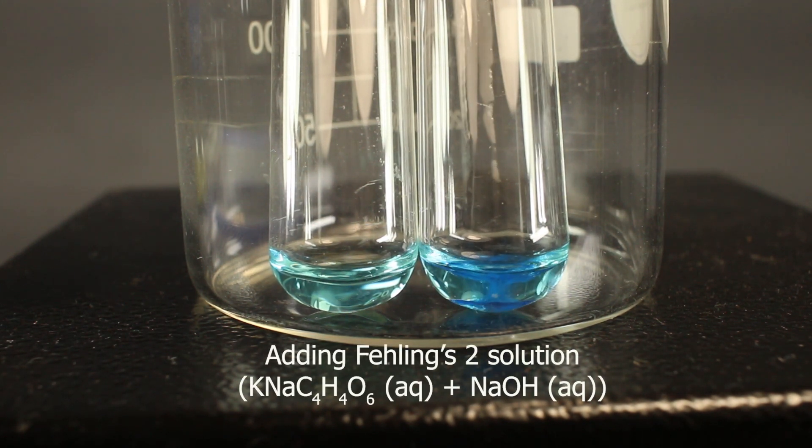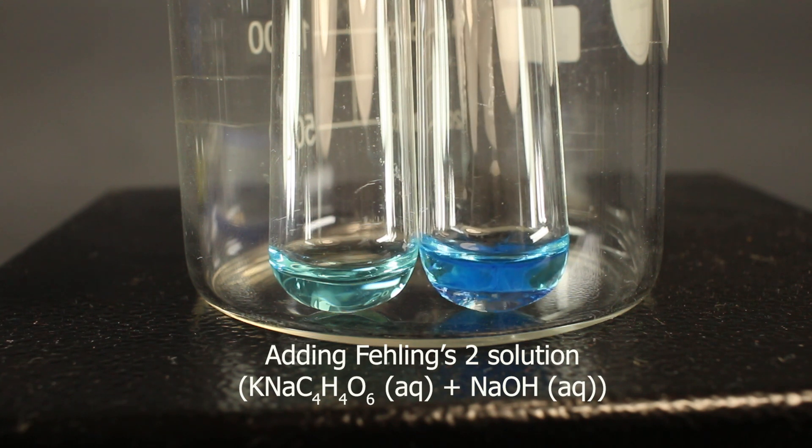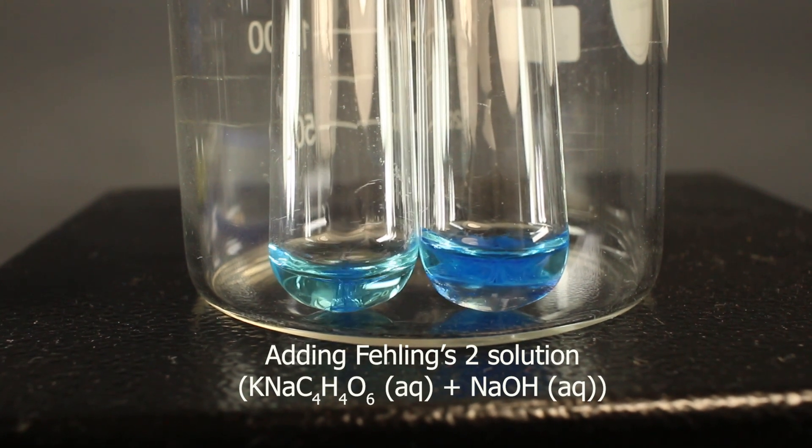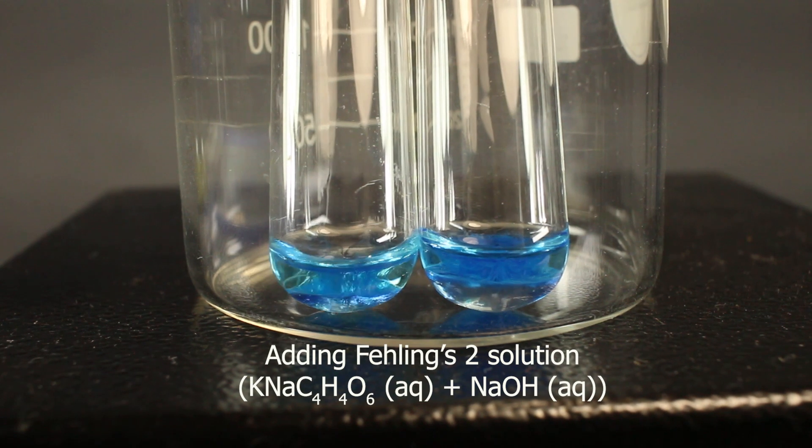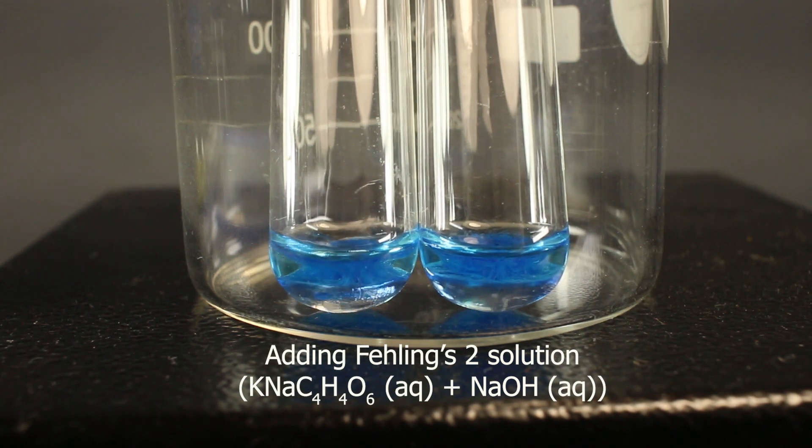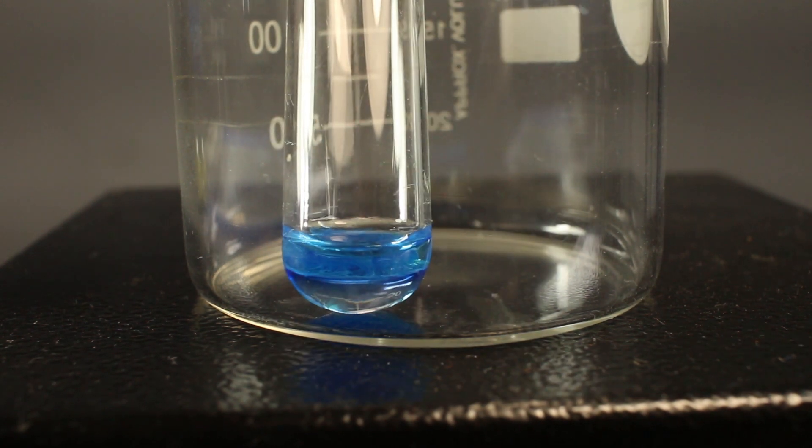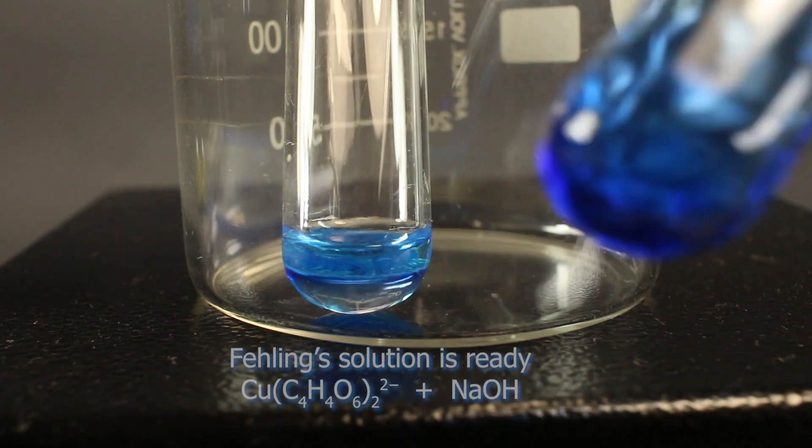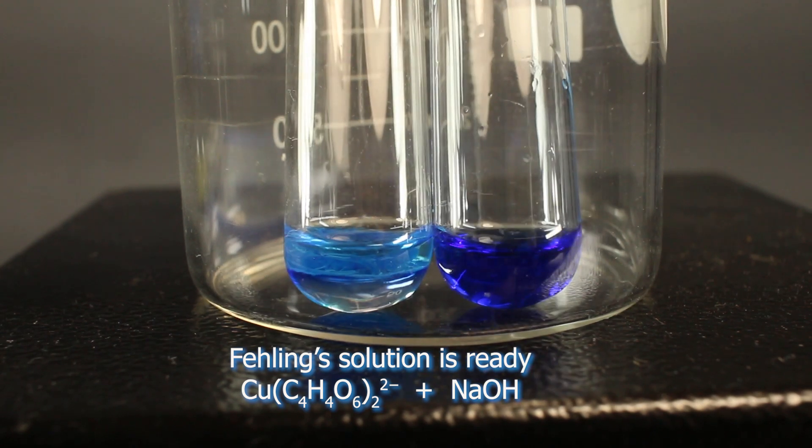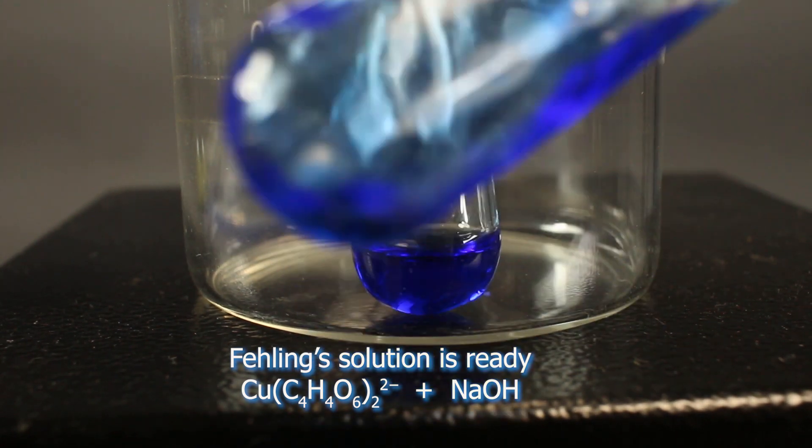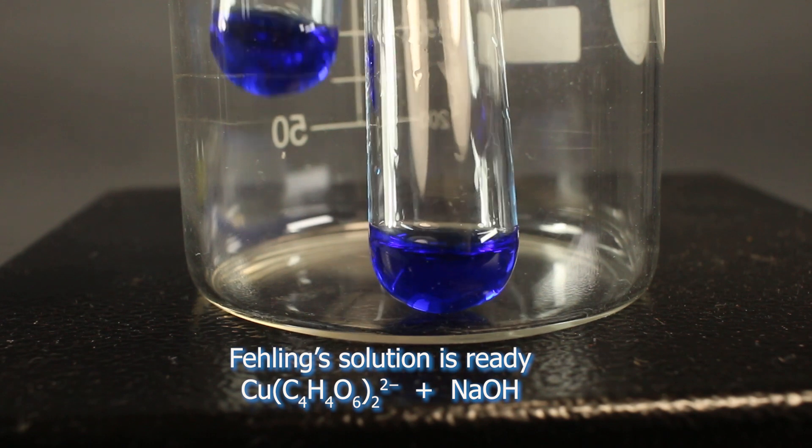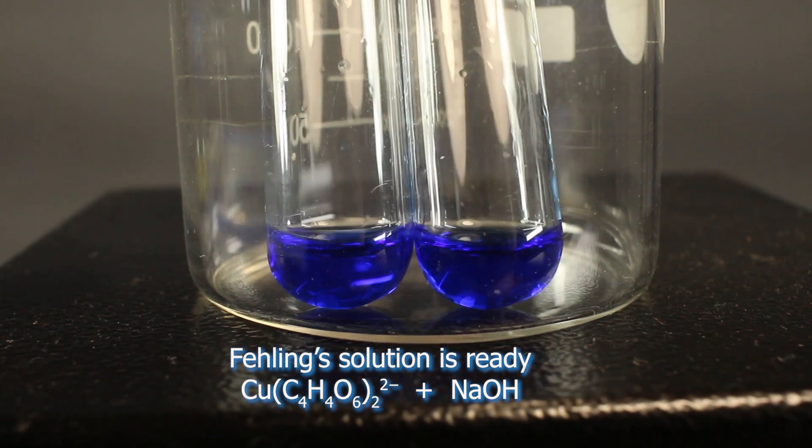Sodium hydroxide, as we add Fehling 2, precipitates copper 2 into copper 2 hydroxide, which is insoluble. You see this blue precipitate, but tartrate can form complexes with copper, making it soluble. Complex of copper with tartrate is deep blue, like here.